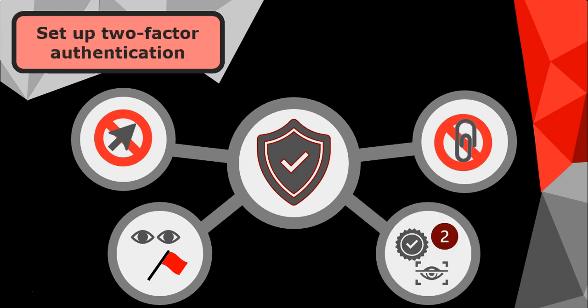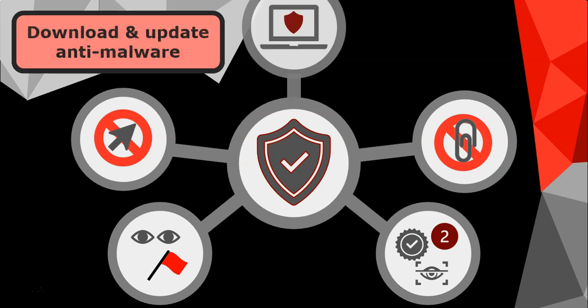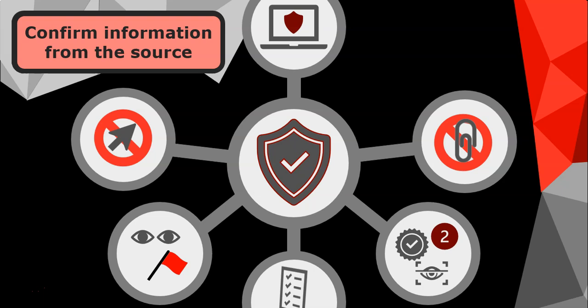Set up two-factor authentication when logging on — don't just use your username and password, but have a second way of validating who you are, for example a one-time PIN or a secondary question. Download and update your anti-malware software, as it's designed to find spoofing attacks and make you aware of any potential threats.